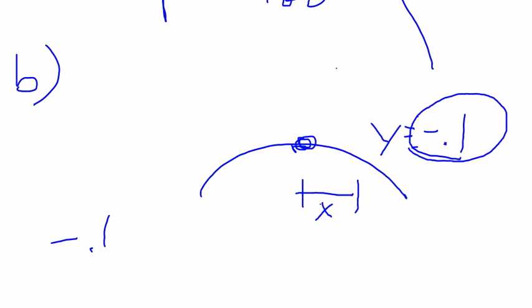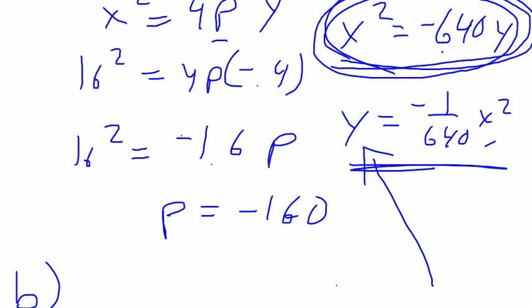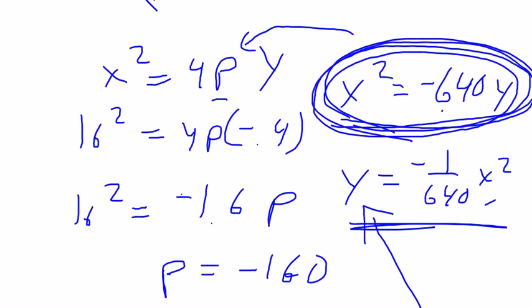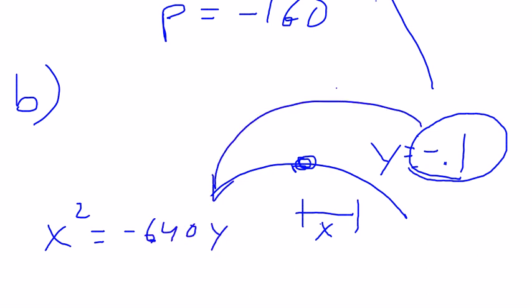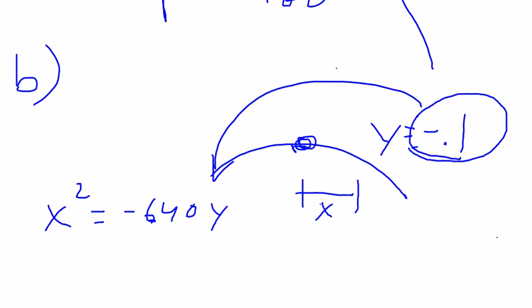I mean negative 0.1 using our equation. In fact, I think I'm going to use this one. It's easier. So x squared equals negative 640, y. Well, we want to figure out what happens to x when y is negative 0.1. So x squared equals 64, right?